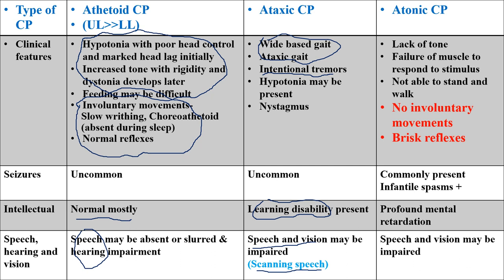To differentiate atonic CP from the initial hypotonic stage of athetoid CP: in atonic CP there are no involuntary movements, whereas in athetoid CP involuntary movements are present. Atonic CP has brisk reflexes while reflexes are normal in athetoid CP. Seizures are commonly present in atonic CP, including chances of developing infantile spasms.